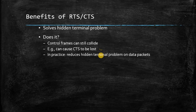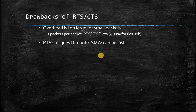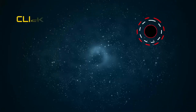The exposed station problem still remains even with RTS and CTS. Drawbacks of RTS/CTS include overhead from these smaller control packets — even if the data is very small, RTS and CTS packets must still be exchanged, increasing overhead. Additionally, the RTS still goes through CSMA and can be lost, and the CTS can also be lost, causing collisions. These are the two main problems — hidden station and exposed station — caused by carrier sense in wireless networks.